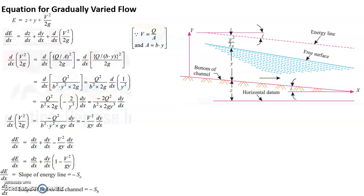So why it is SE and SB? It always determined by the values of numerator here DE by DX, E. So it is energy line Z. So for the Z line or bottom of the channel you have a slope of I. So it is minus SB. So I will substitute DE by DX and DZ by DX in terms of minus SE and minus SB. That is what we have here.